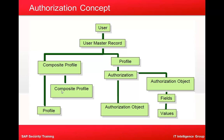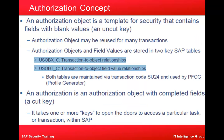Authorization fields are the elements that require protection. Activity means things like create, modify, delete, display, approve, save, reverse, and print — these are called activities within the SAP system.